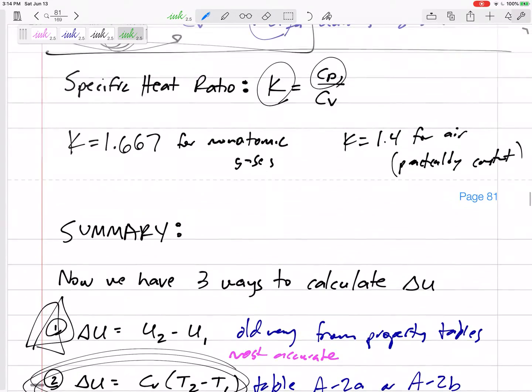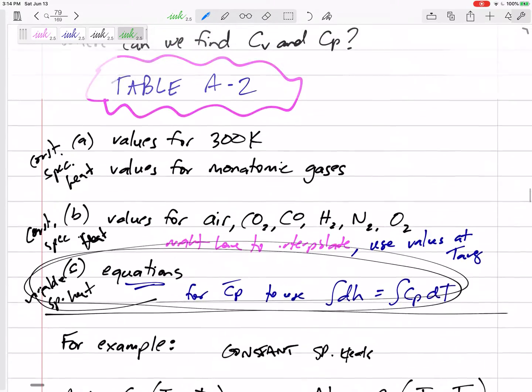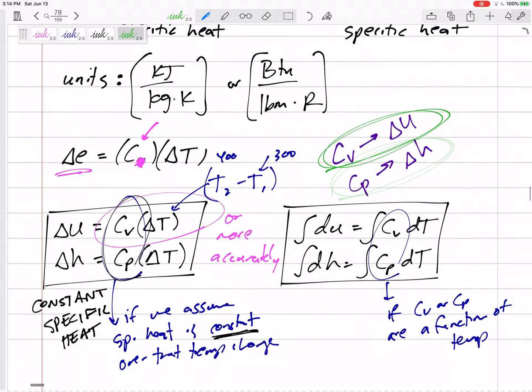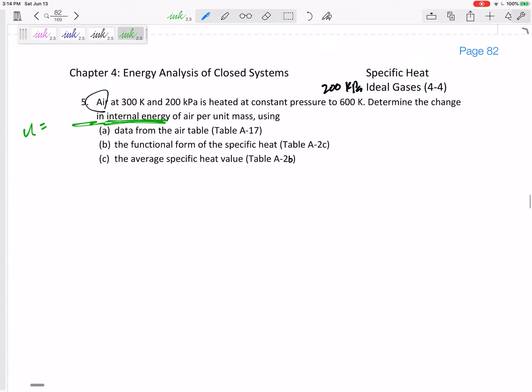This is kind of tricky. Even though it says constant pressure, the thing to think about here is CV is for U and CP is for H. This one is asking for U. If we use specific heats, then we do CV delta T.